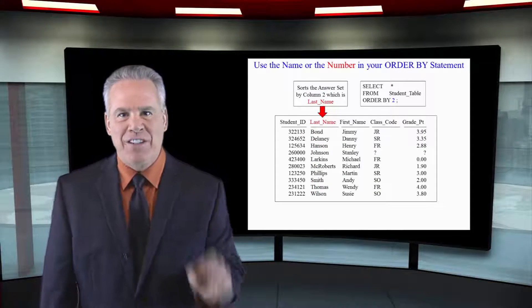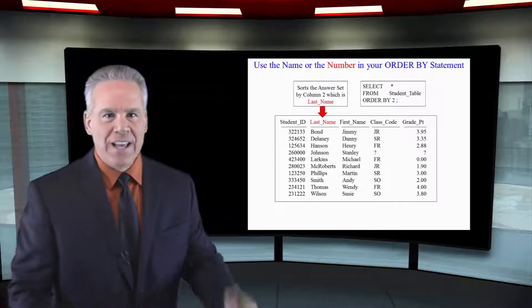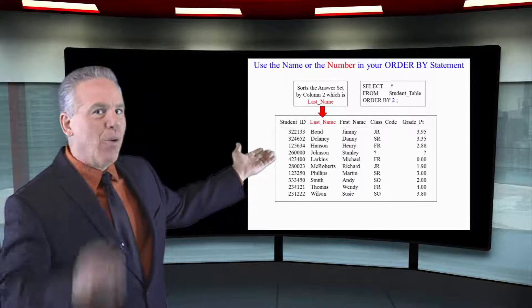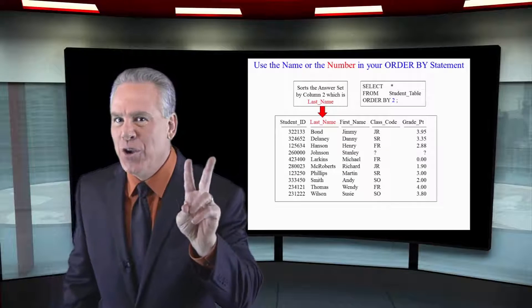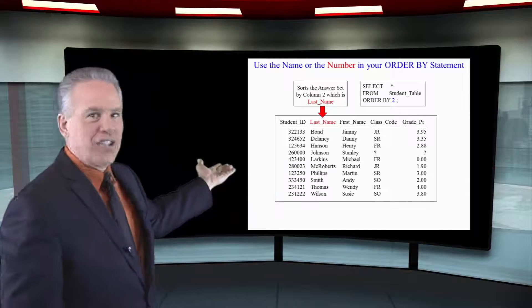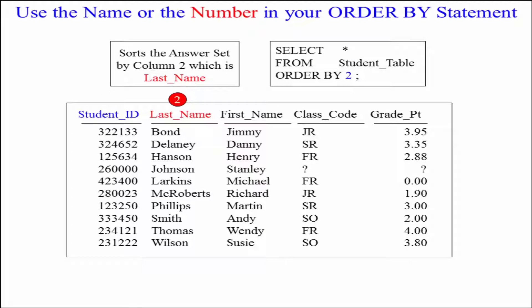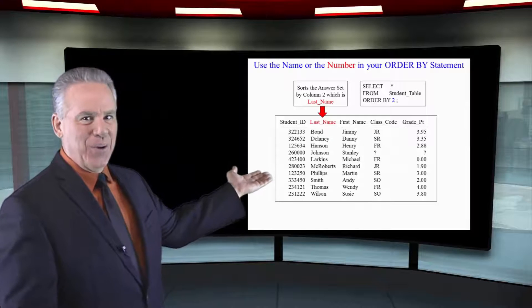Sometimes you're going to see this, so let me clear it up right away. SELECT * FROM student table, ORDER BY 2. That means whatever the second column coming back on the report is, sort by that. In this case it's last name, so we're going to sort by last name ascending when we say ORDER BY 2.